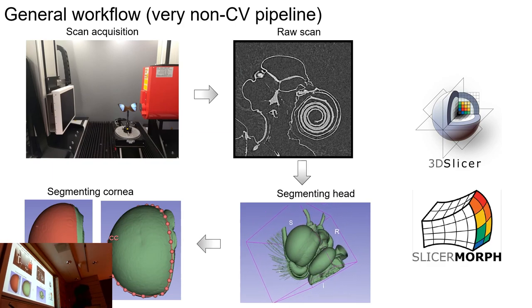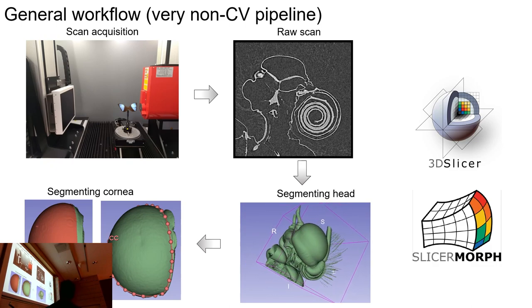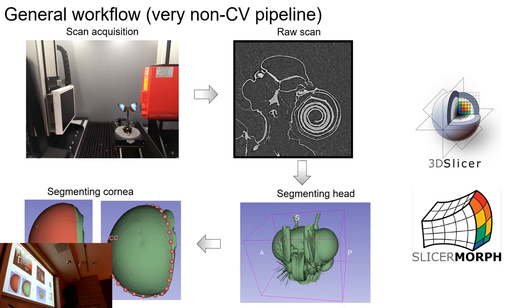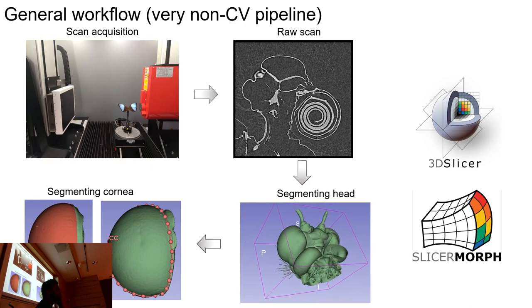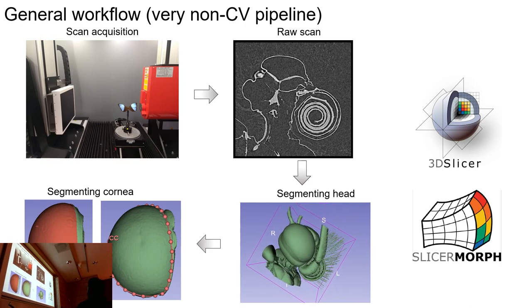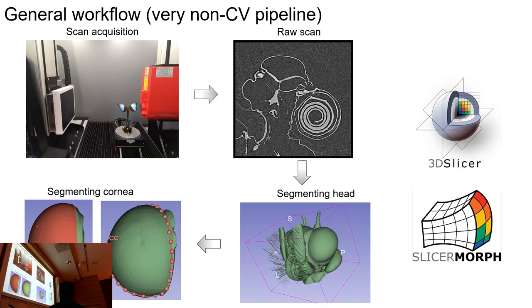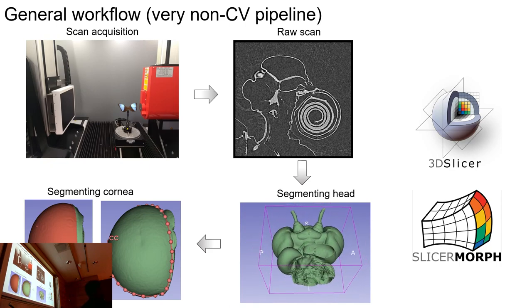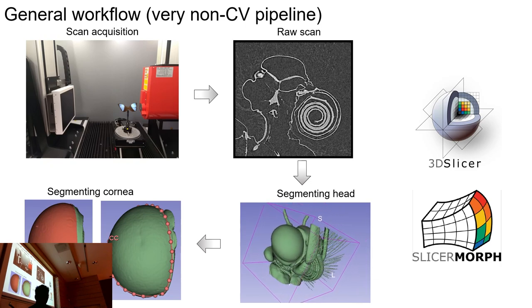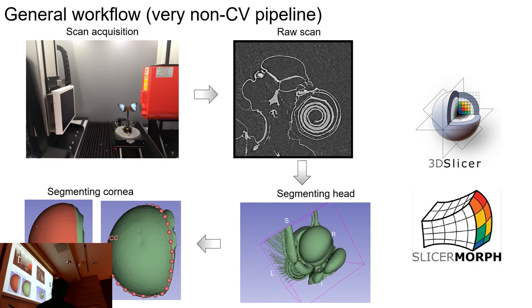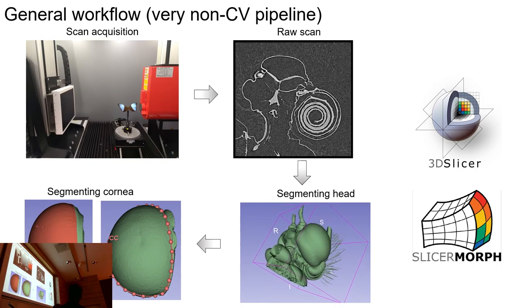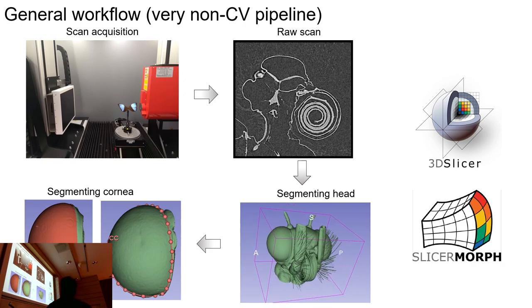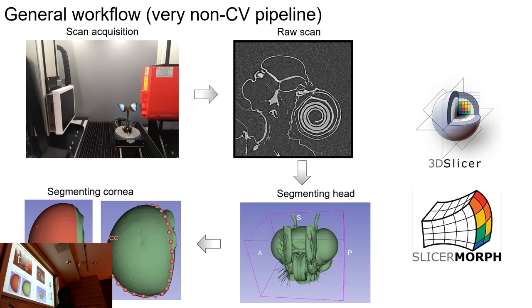This is my very non-CV pipeline, and I hope I'll get some ideas on what to do after this workshop. So we get the scan — this is how the raw scan looks in the XYZ plane. The tricky part is that I want to get the cornea, or the outer eye surface area, out, and there is no way I can segment only the cornea. What I need to do is segment the whole head out, because the density is more or less similar across tissues since they are all dried, so I don't get good enough contrast. If I use a simple threshold, I segment the whole head out, and then I place landmarks to define the boundary of the eye. Using 3D Slicer and the SlicerMorph plug-in, it kind of cuts out that part, so I get a replica of what the eye looks like.